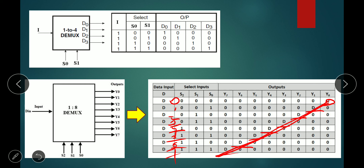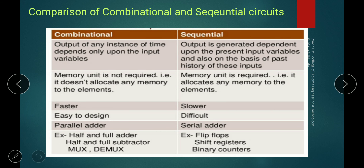So in this way we draw multiplexer and demultiplexer circuits. Now, what is the comparison of combinational and sequential circuits? In a combinational circuit, the output at any instant of time depends only upon the input variables. But in a sequential circuit, the output depends upon the present input as well as the past history of that input.